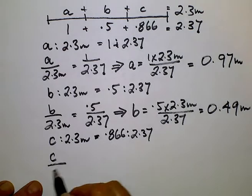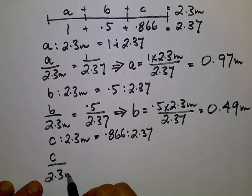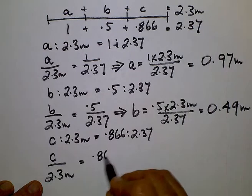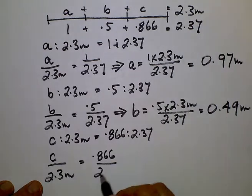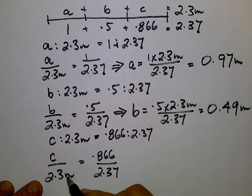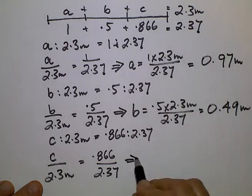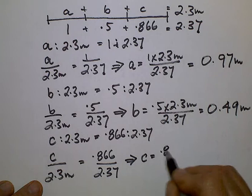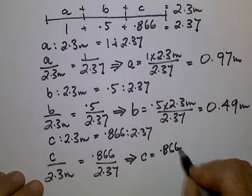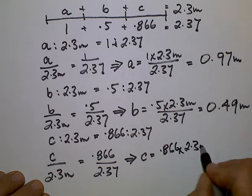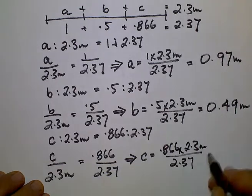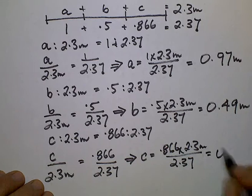To transpose 2.3 metres to find the value for C, which is 0.866 times 2.3 metres divided by 2.37, which calculates to C having a length of 0.84 metres.